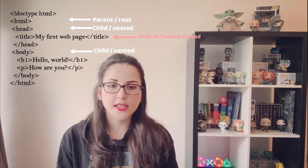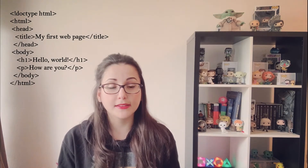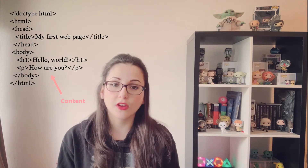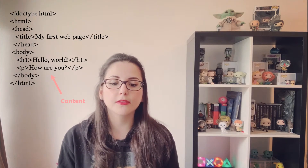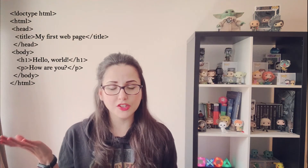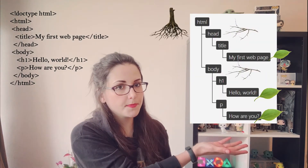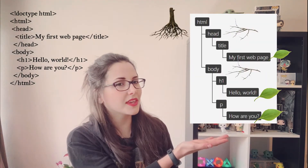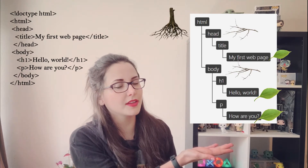The title is a child of the head element, and the heading and the paragraph are children of the body element. Inside each of these nested children, we find the texts, which are the content of each element — these are defined as the leaves. We can represent this small HTML document as a tree where we can see the parent, children, and their respective content as the leaves.